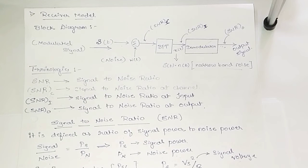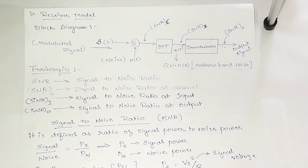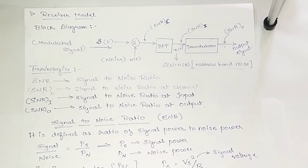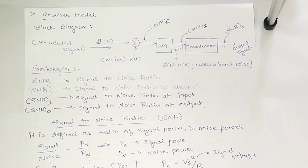So here we are concentrating only on the receiver part. Why? Because noise is added at the channel or intermediate stage. When the noise gets added, we are going to see the signal to noise ratio. When noise is added at the intermediate part, there is no need to check at the transmitter part — no noise will be there. While transmission of a signal, noise will get added, so we concentrate on the receiver model only.